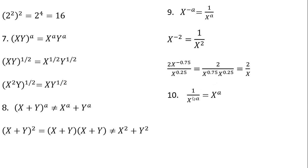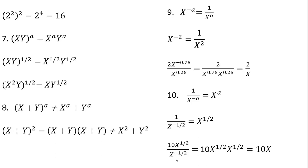Another example: 1 divided by x raised to the minus a power can simply be written as x to the power of a. So that expression simplifies to x to the 1 half power. Another example: take x to the minus 1 half and move it into the numerator, then add up the exponents on x — this simplifies down to 10x.